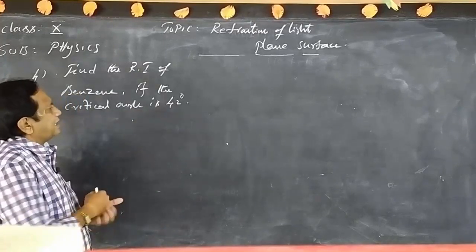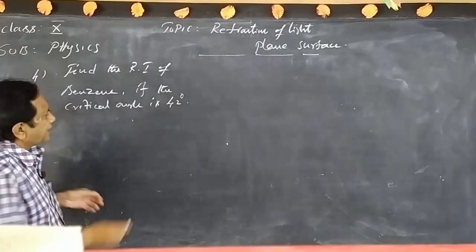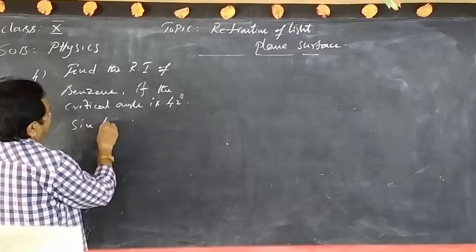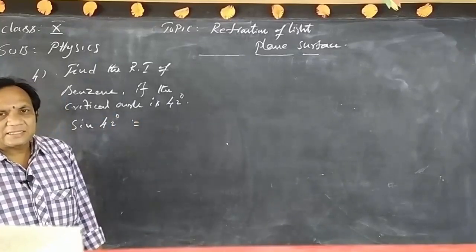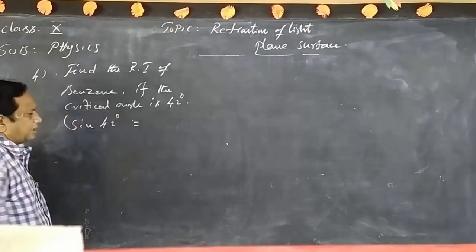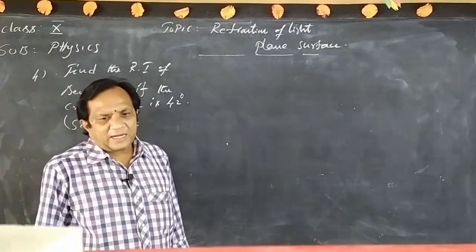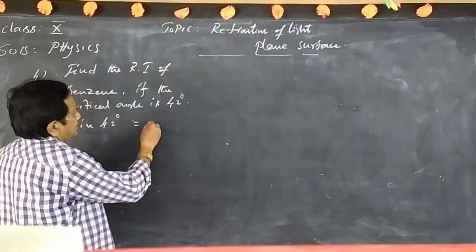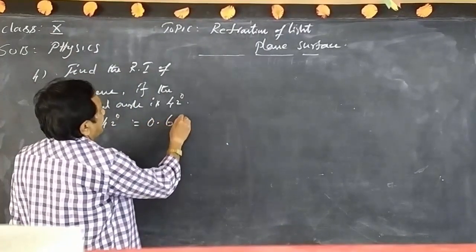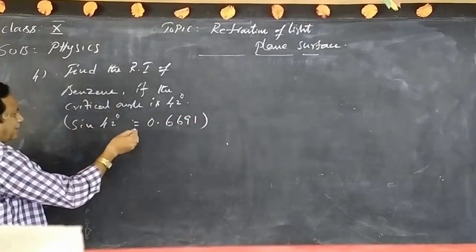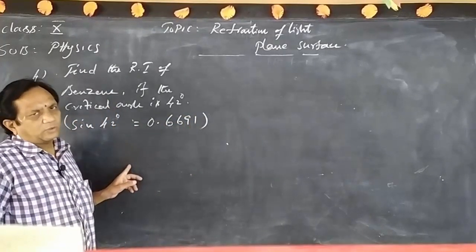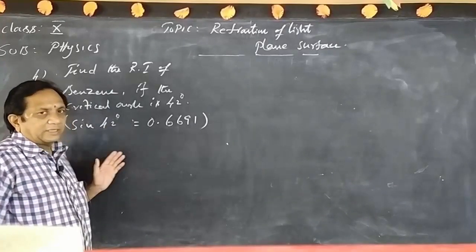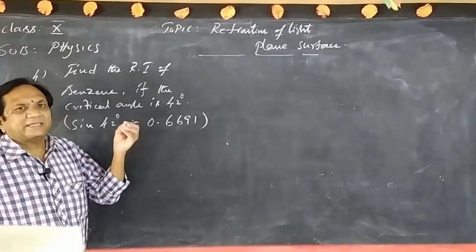Here the critical angle is 42 degrees, so we take sin 42 degrees. According to the logarithm book, the value of sin 42 is 0.6691. This value is needed from the logarithm book; without it we cannot calculate. So compulsorily we need this value.